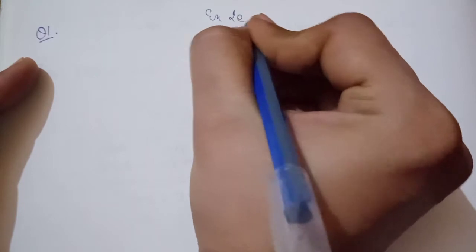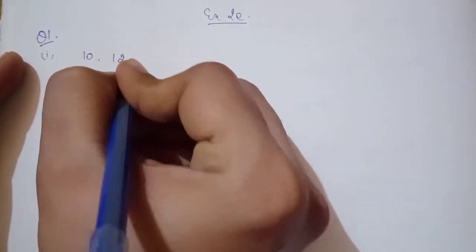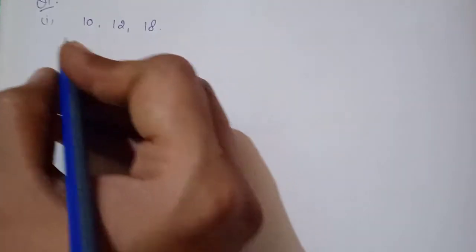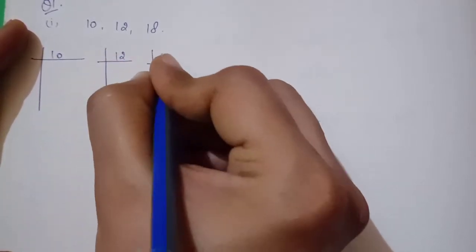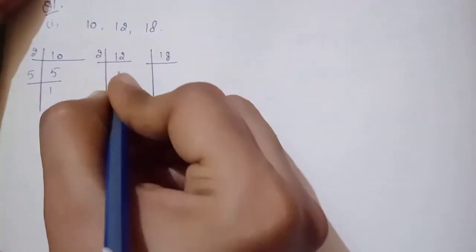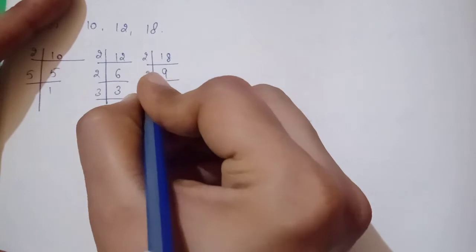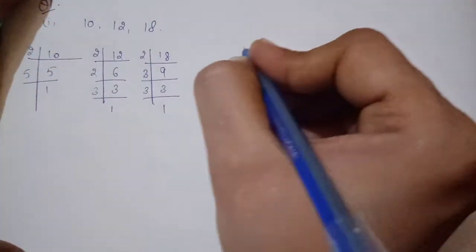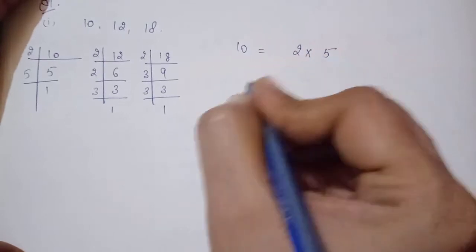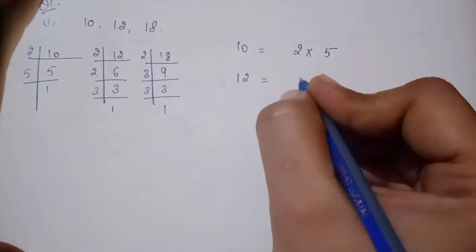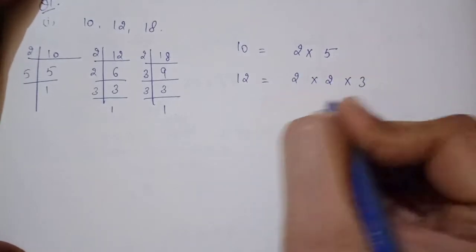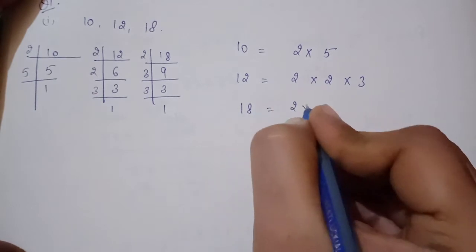Exercise 2E, Question 1, Part 1: the numbers are 10, 12 and 18. First I will take the prime factorization of 10, then 12, then 18. For 10: 2 × 5. For 12: 2 × 2 × 3. For 18: 2 × 3 × 3. So 18 is 2 into 3 into 3.